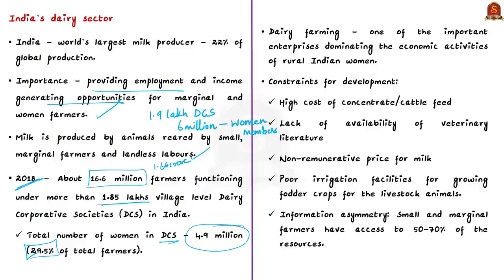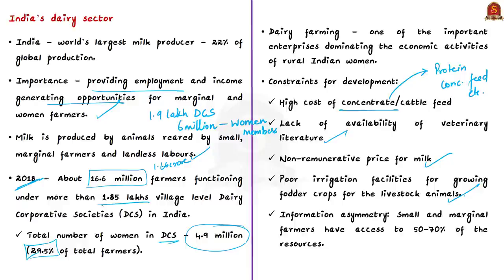Women entrepreneurs in the dairy sector face several constraints hindering their development. Major constraints include the high cost of concentrate feed or cattle feed — which is feed intensely focused on one class of nutrients such as energy concentrate or protein concentrate — lack of availability of veterinary literature, non-remunerative price for milk, and poor irrigation facilities for growing fodder crops. Another major challenge is information asymmetry, where small and marginal farmers have access to only 50-70% of the resources that large and medium farmers usually have.